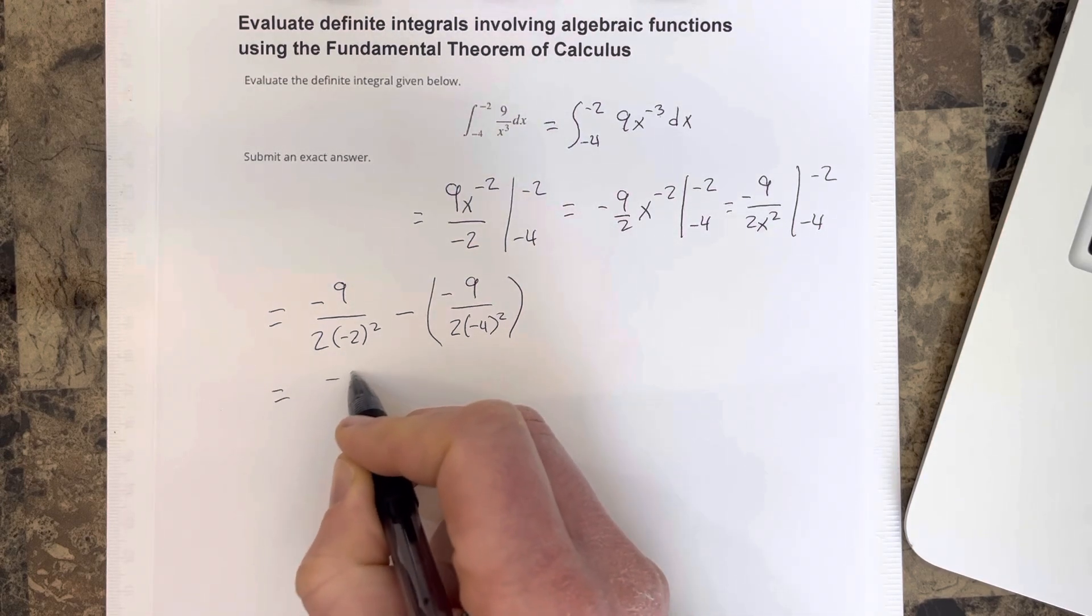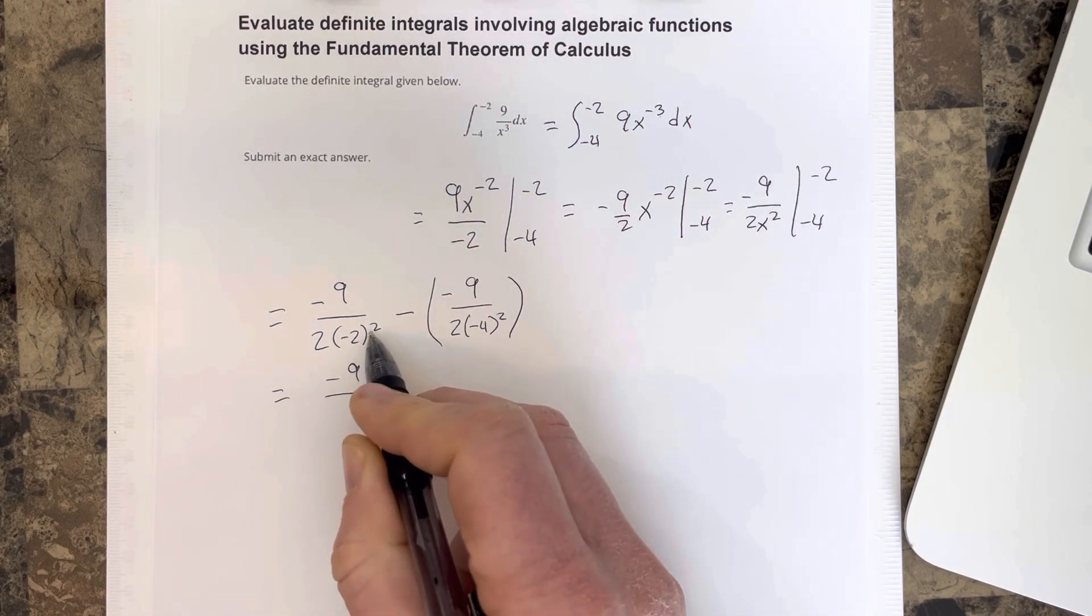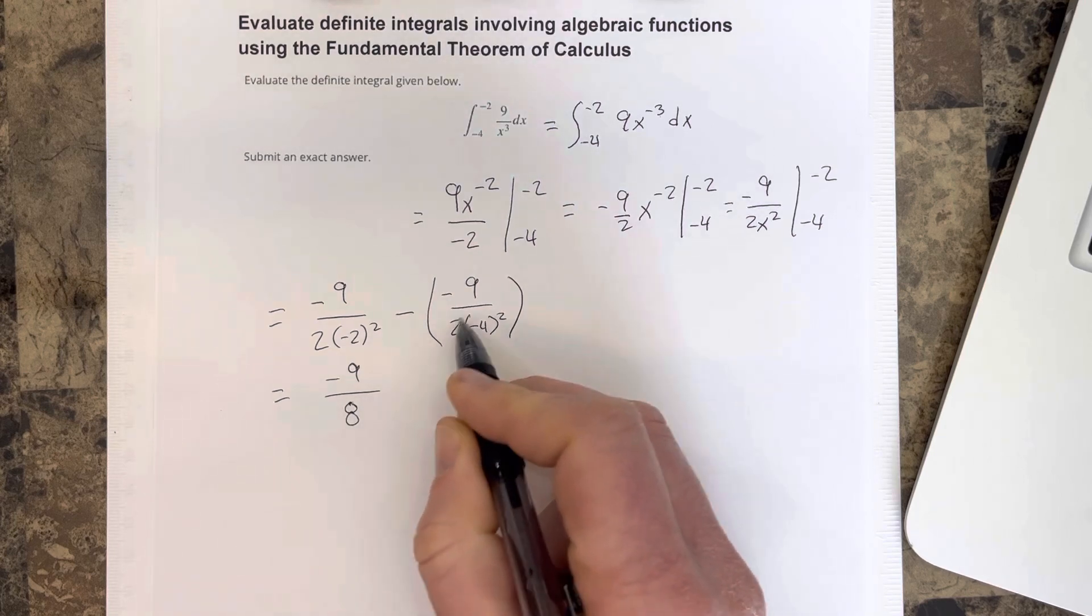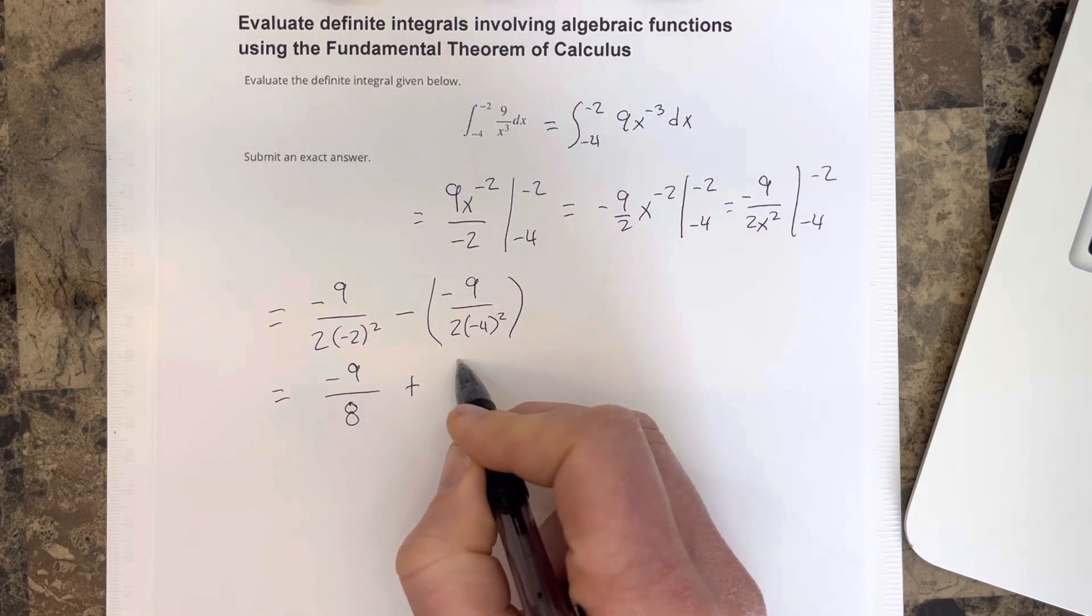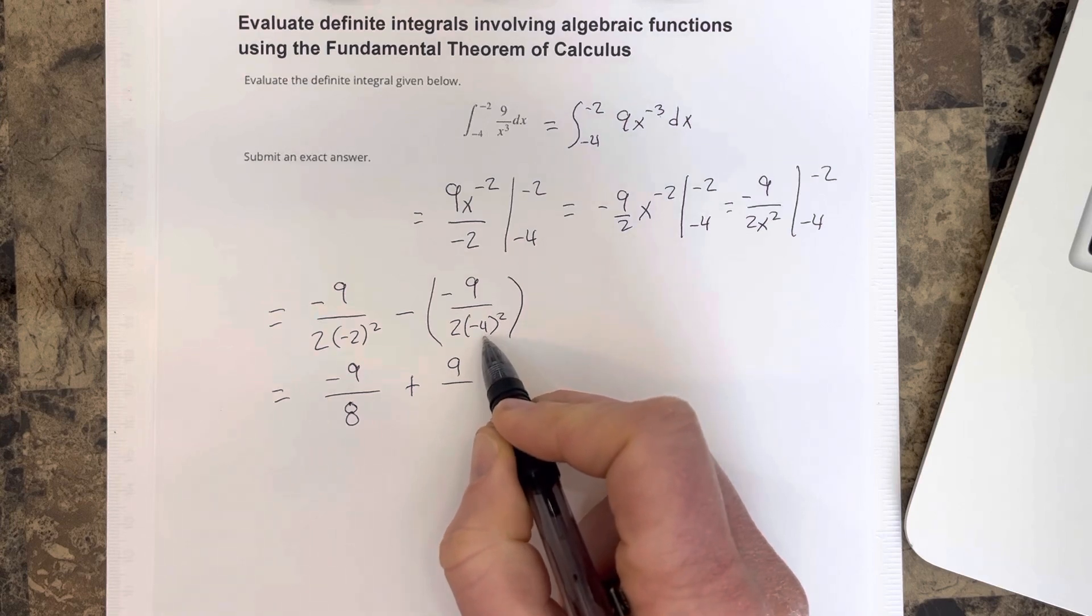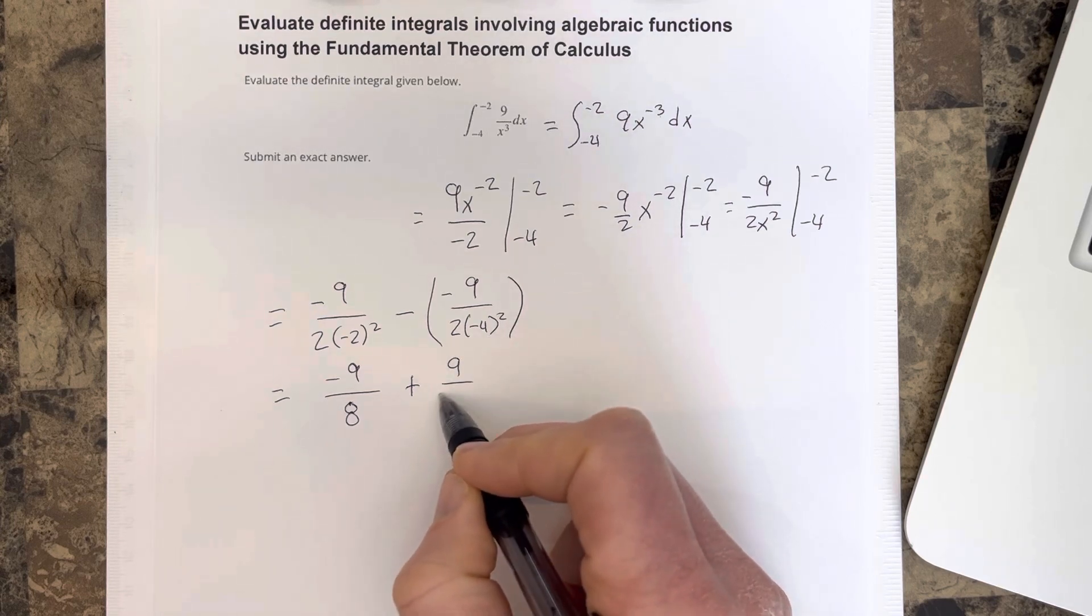So we end up with negative 9 over, this is 4 times 2 is 8, negative 9 over 8. And this would be plus 9 over 4 squared 16, so that's 9 over 32.